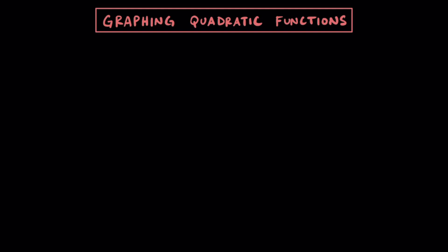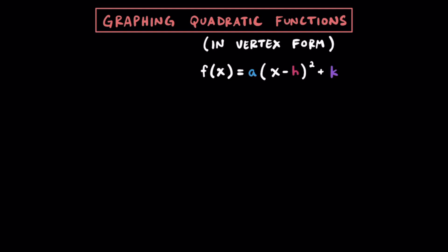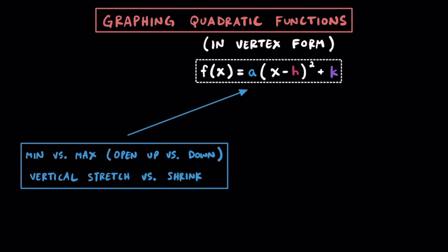In this particular video we're going to practice graphing quadratic functions when they're written in vertex form. Just a reminder: the vertex form of a quadratic function is f of x is equal to a times the quantity of x minus h squared plus k. Our value a here will let us know if the vertex is at the minimum or maximum, and if the parabola opens up or opens down, and also lets us know if we have a vertical stretch or vertical shrink.